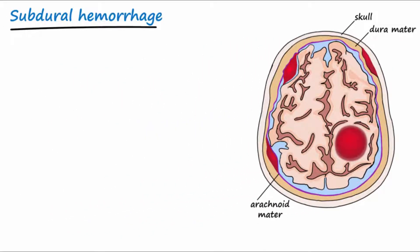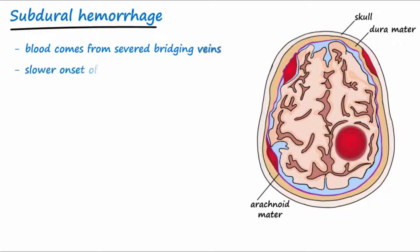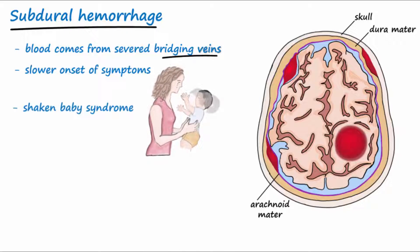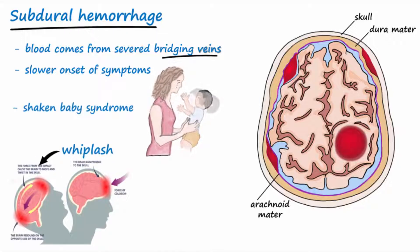With subdural hemorrhages, blood comes from the severed bridging veins that drain blood from the cerebral cortex into the sagittal sinus. Symptoms of subdural hemorrhage typically have a slower onset than epidural bleeds because the bleeding comes from veins instead of arteries. Under conditions of shaken baby syndrome or whiplash, the brain moves intensely inside the skull and shears off the bridging veins, just superior to the arachnoid membrane. Blood starts to fill the space between the arachnoid and dura mater.